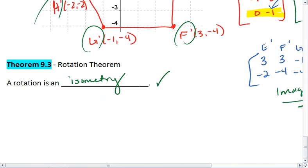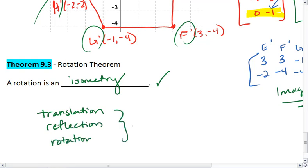So a rotation is also an isometry. What we've realized is that a translation, a reflection, and now a rotation are all isometries. They give us congruent shapes because they're preserving both length and angle measure.